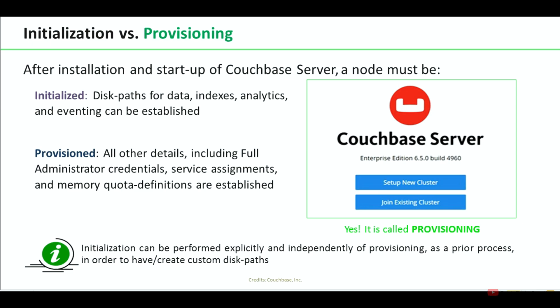After installation and starting of the Couchbase server, a node must be initialized and provisioned. In the initialization phase, we define the disk path for all the services we are going to use — data, index, query, eventing, and analytics. We can use the same path on all nodes of the cluster, or define individual paths for each node. In the provisioning phase, full administration credentials, the list of services for that specific node, and memory quota definitions are established.